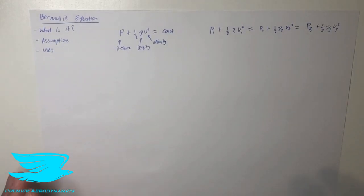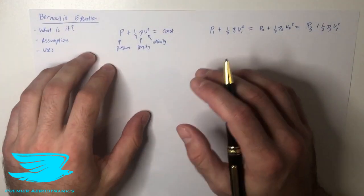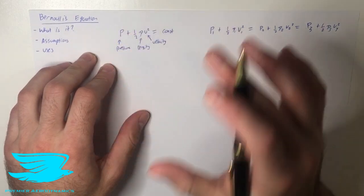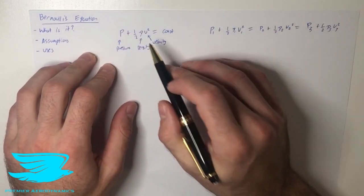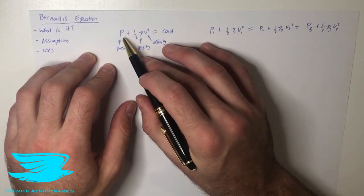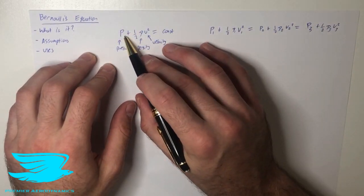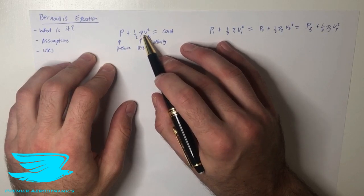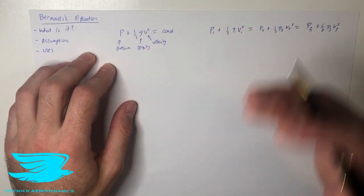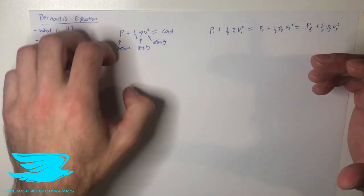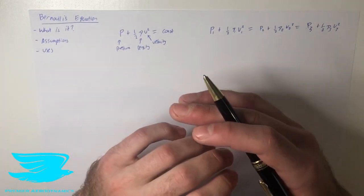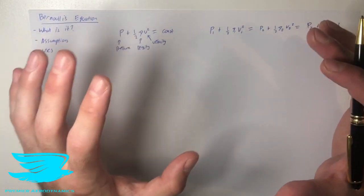So what does this mean? First of all, if we know two of these properties, we can figure out the third one. It also means that if the pressure drops and the density stays the same, the velocity must increase. This is a very important point that we use in so many different applications.